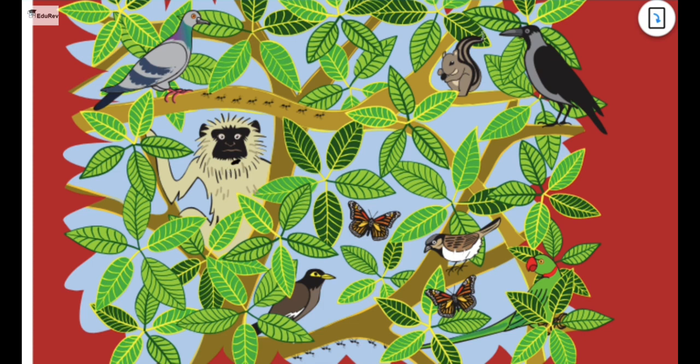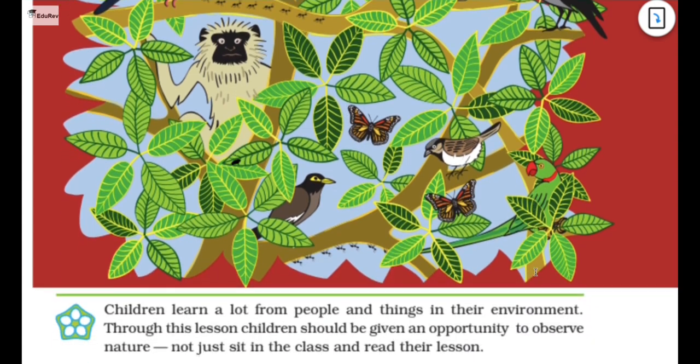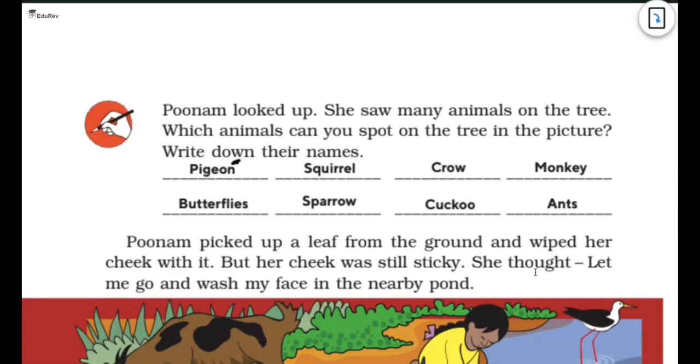Alright, now you can see there are so many animals here. We have pigeon. Just see where my pen is actually going. So this is a pigeon. This is a monkey. Then we have squirrel. We have ants. We have, I guess it's a sparrow. We have cuckoo. We have crow. We have butterflies. We have parrot here. So there are so many animals out there.